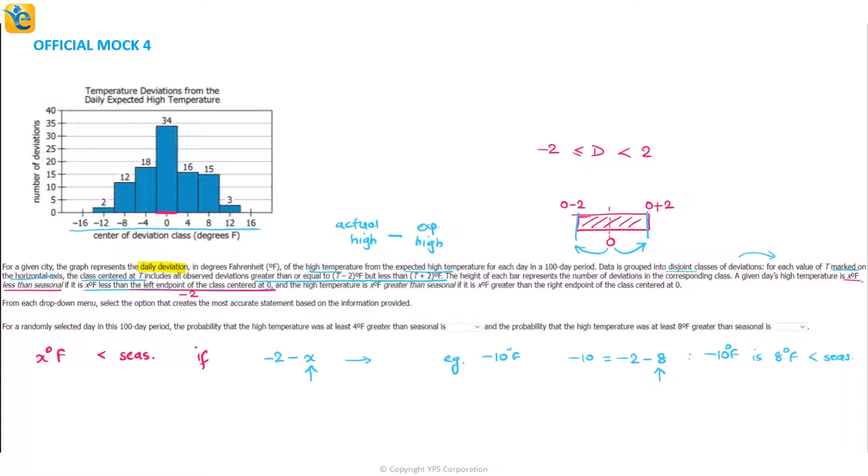A temperature is x degrees Fahrenheit greater than seasonal if it is x degrees Fahrenheit greater than the right endpoint of the class centered at zero, which is 2. So we are saying if it is x more than 2, if it is 2 plus x, that's it. This is your second definition.